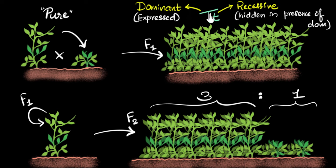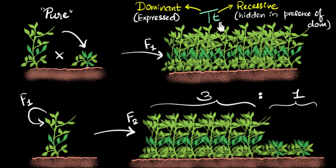If you're wondering why we wrote small t and not s for short, this is the notation we use today. For dominant traits, we use a capital letter. And for recessive — the hidden traits — we use the small letter of that same alphabet. We use the same alphabet to represent both traits. So even this plant that looks tall has both a tall and a short trait in it.